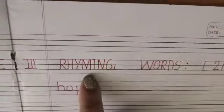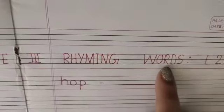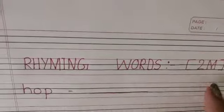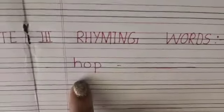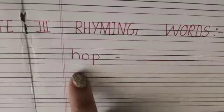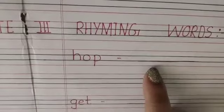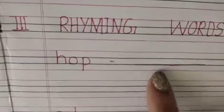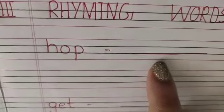Next, the third section is rhyming words, that is 2 marks. The first word is 'her' — there is a dash, and in the dash you have to write the answer. The second word is 'me', and then write the answer.